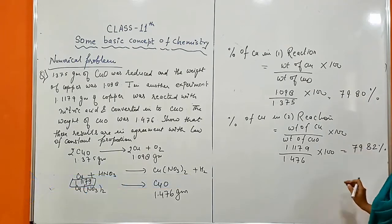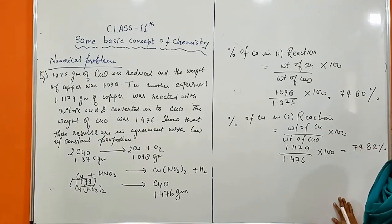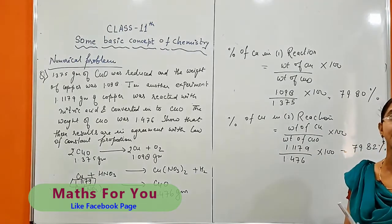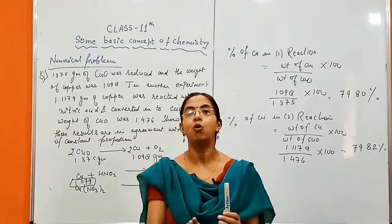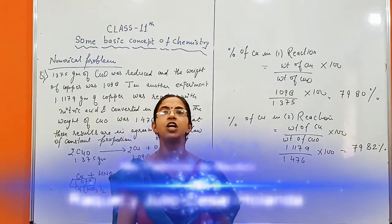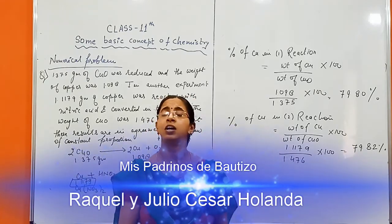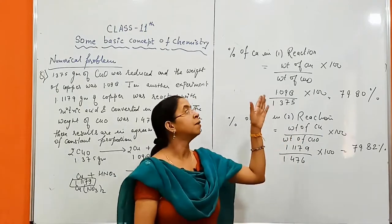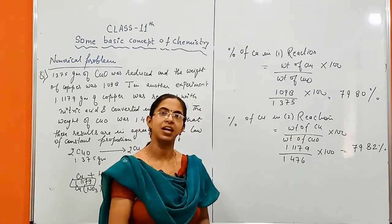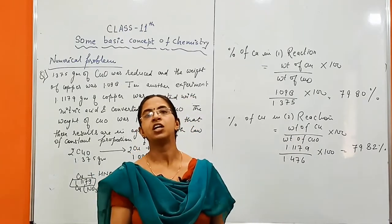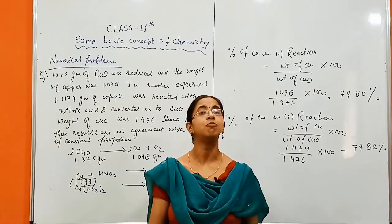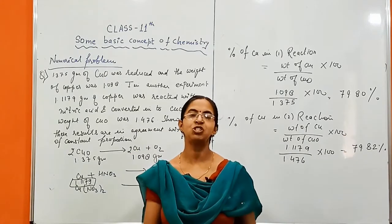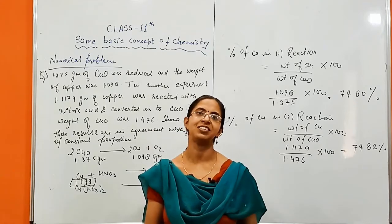Both data sets are in agreement — the same percentage of copper is obtained in both reactions. Since the percentage of copper is the same, the percentage of oxygen is also the same. The percentage of constituent atoms remains the same whether you make copper oxide from copper or copper from copper oxide, confirming the law of constant proportion. In the next lecture we will study the law of multiple proportion. Keep watching, keep sharing, and please subscribe and leave your comments. Thank you.